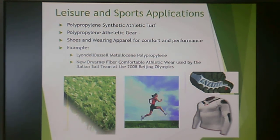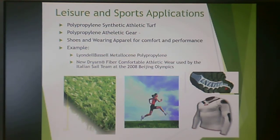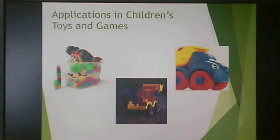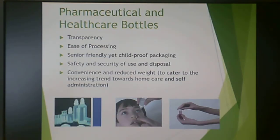Most plastics are used in leisure or sports applications, and polypropylene has a big application in astroturf. It's also used in a lot of athletic gear — dry yarn fiber was used in the Italian sailing team's Beijing Olympics uniforms. A lot of wicking fabrics are synthetic, and polypropylene is one of those synthetic fibers. If you have kids, you'll know the ubiquitous nature of plastic in children's toys, and polypropylene is no exception.